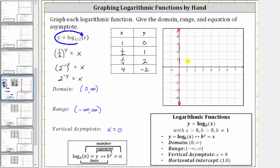And we have one comma zero, which is the horizontal intercept. We have 1½ comma one, which is here. We have 1¼ comma two, which is approximately here. And then we have four comma negative two, which is here.